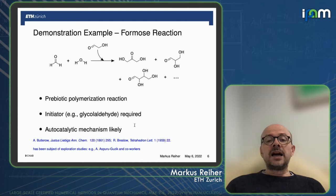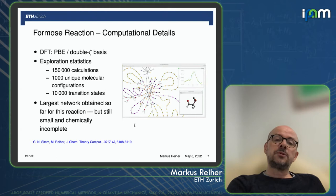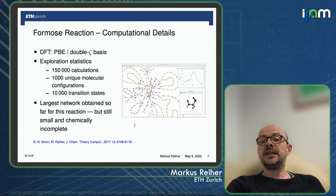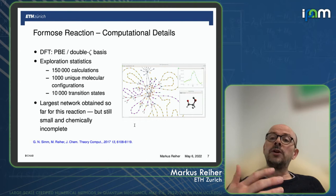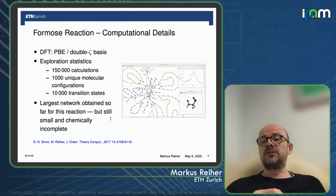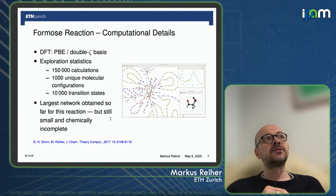We performed DFT calculations with the PBE functional and a double-zeta basis set. We carried out 150,000 calculations, found 1,000 unique molecular configurations, and 10,000 transition states. At some point we simply stopped. What we obtained is still the largest network obtained so far for this reaction, but it is still very small compared to what is really important, because we neglected solvation, catalysis, and all these compounds that would lead to a combinatorial explosion.